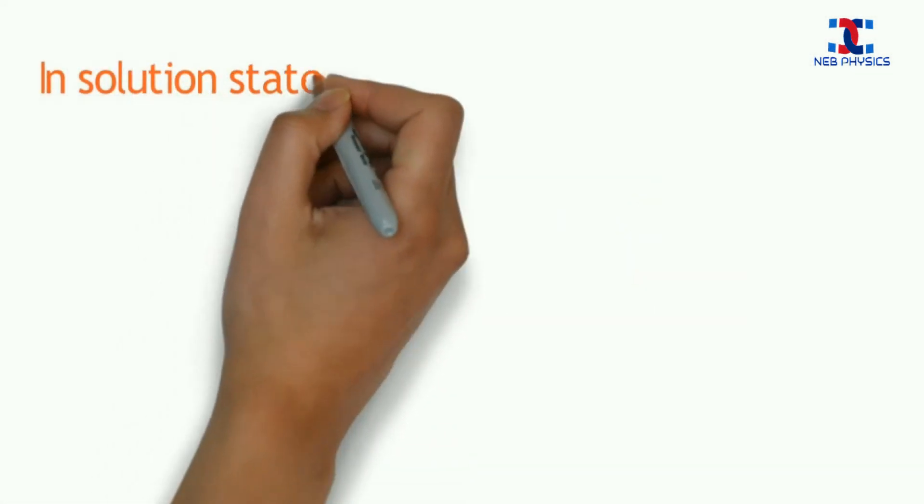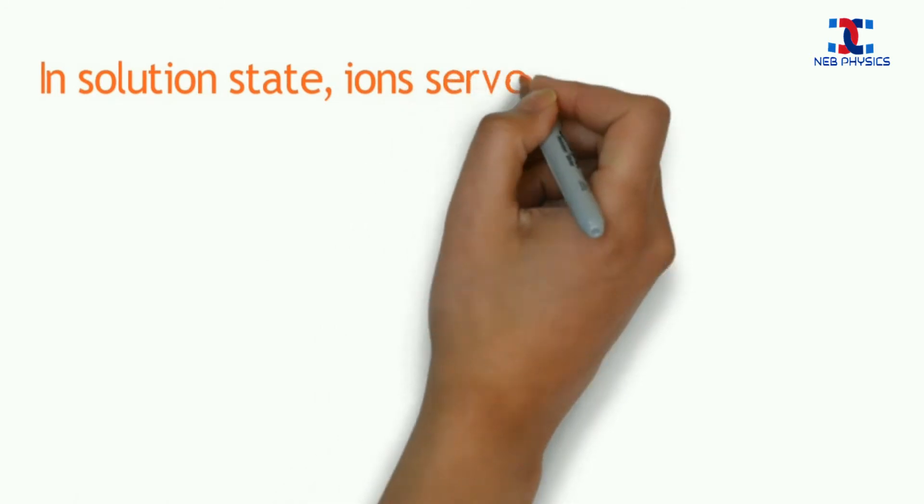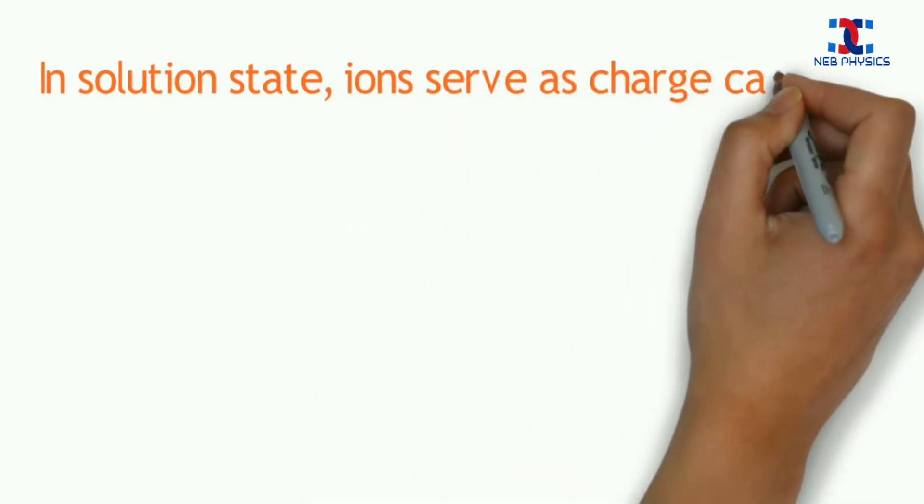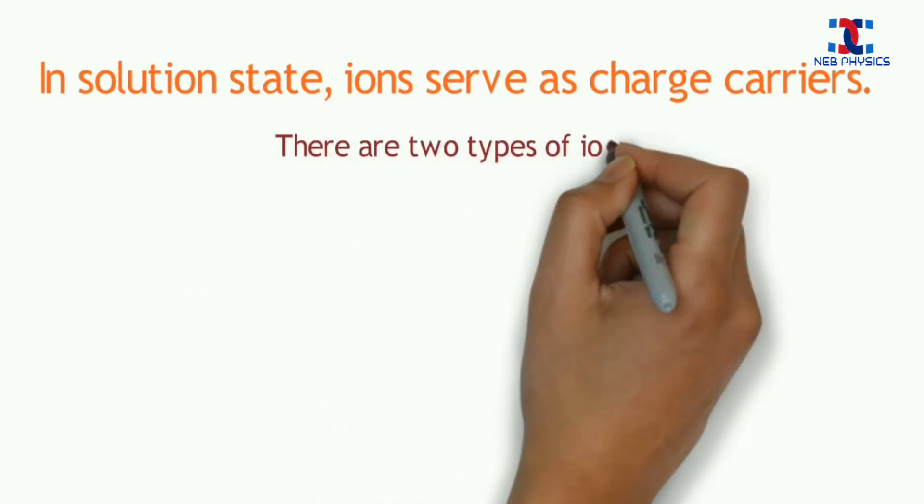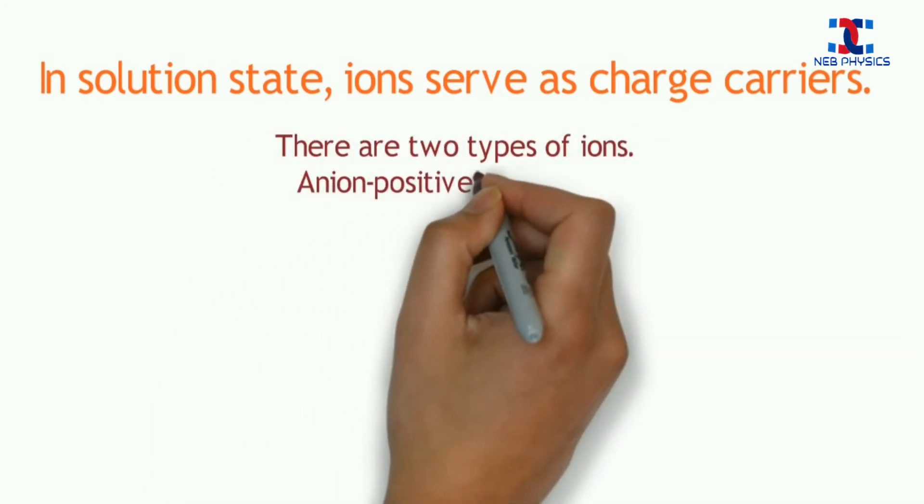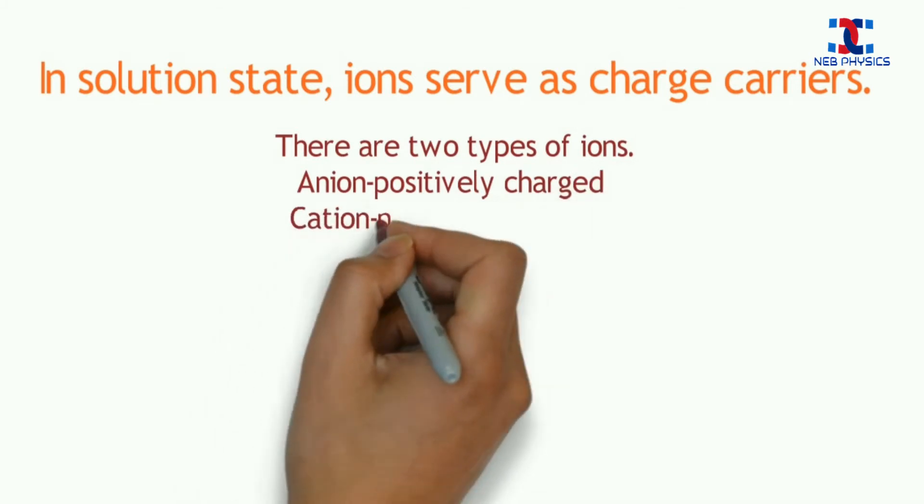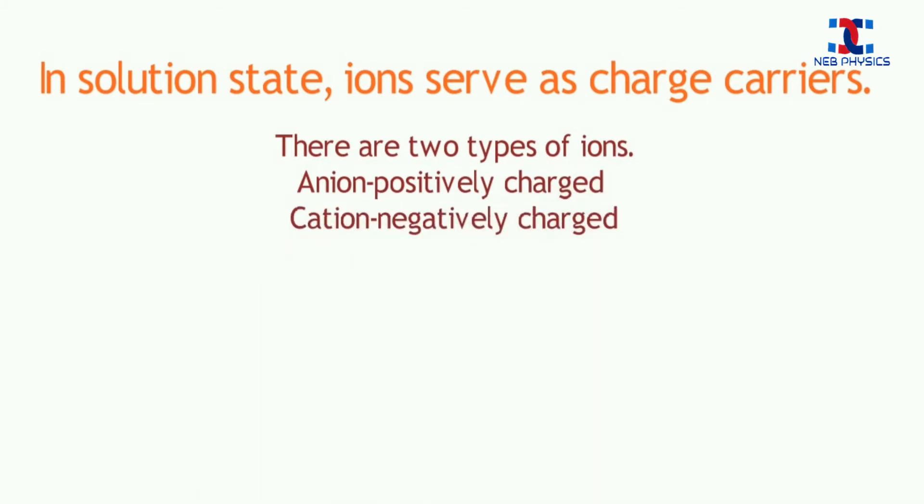Now what helps to carry the charge in the solution? Well in the solution, the ions are charge carriers. There are two types of ions. The negatively charged ions are called anions and the positively charged ions are called cations. Now let's see how they help to carry charge with the help of this animation.